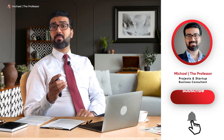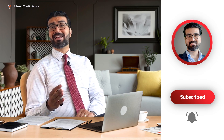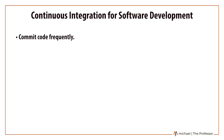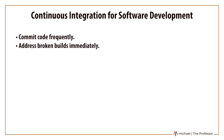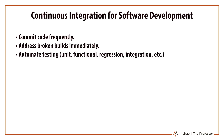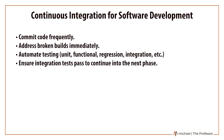Software development organizations must continually find ways to stay ahead of the competition through: committing code frequently, addressing broken builds immediately, automating testing such as unit, functional, regression, and integration tests, ensuring integration tests pass to continue into the next phase, running private code builds, and avoiding broken code.